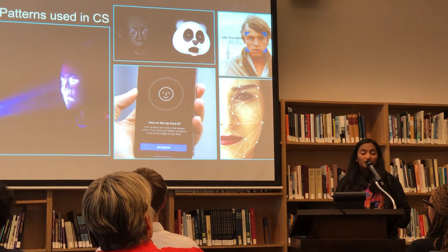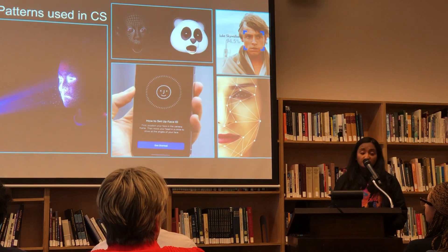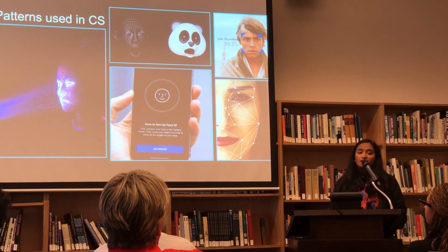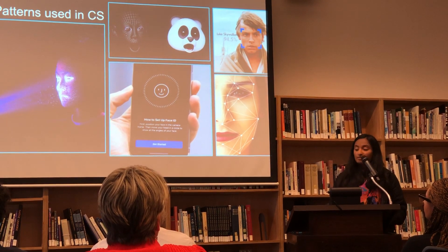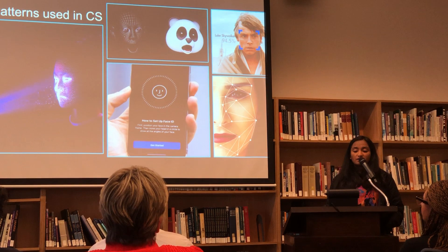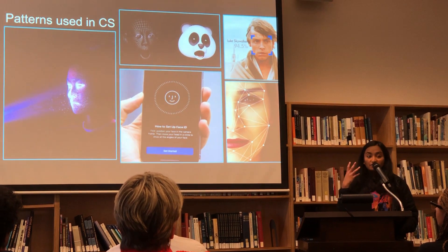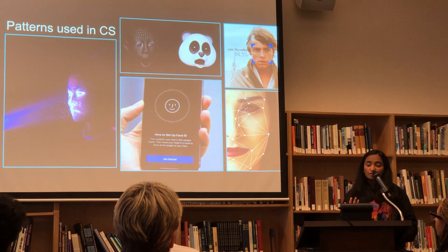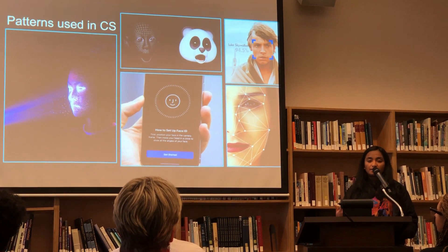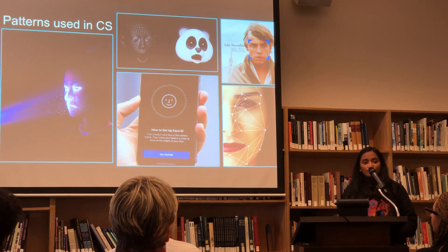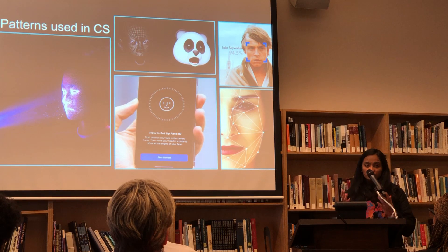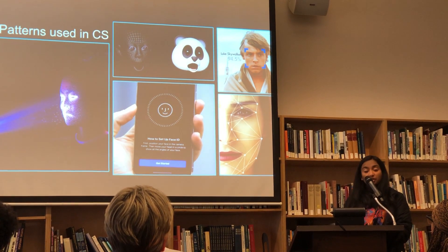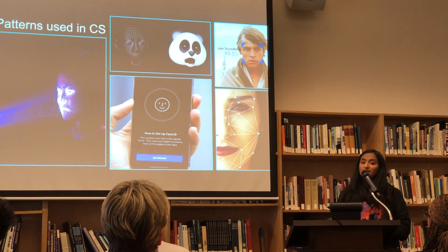In computer science we use pattern recognition for Face ID. Face ID is a function where the first time you set it up, it projects a series of light dots onto your face and creates a map of your face. There is a separate camera in your phone which takes snapshots of only those dots on your face. Every time you open up your phone to unlock it, it takes a new snapshot of your face with the dots on it and compares it to the previously taken ones. If it's a match, you can get into the phone. If it's not, then you can't — it's pretty simple.